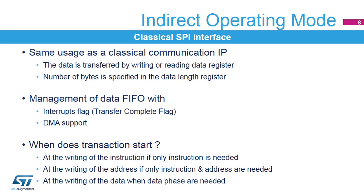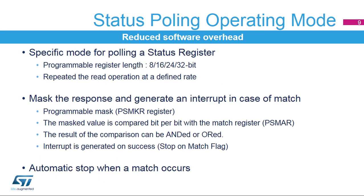In indirect operating mode, the OctoSPI behaves like a classical SPI interface. Transferred data goes through the data register via FIFO. Data exchange is driven by software or by the DMA, using related interrupt flags in the OctoSPI status registers. Each command is launched by the writing of an instruction, address, or data depending on the instruction context.